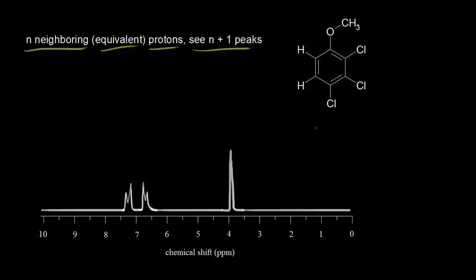In the last video, we looked at this molecule, and we focused in on this proton right here in red, and we said that this signal right here was due to the proton in red. We also talked about this proton right here in blue, and this signal is due to the proton in blue. Let's look at the proton in red and see how many neighboring protons we have.